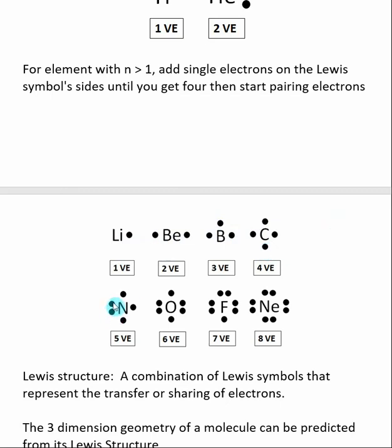Then with the fifth one, you start pairing them. Here with nitrogen, we have five valence electrons. You put one electron on each side, then the fifth one, you pair it. So nitrogen actually has three unpaired electrons and one set or pair of electrons.